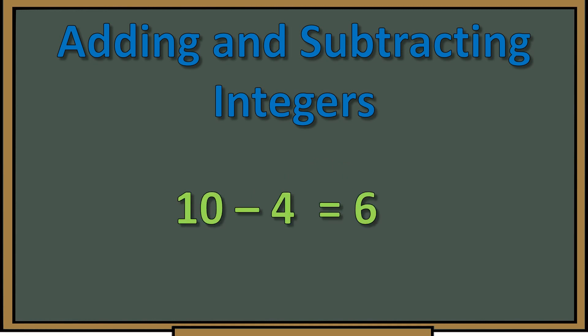We have ten minus four, which should equal six. Now instead of adding, we're subtracting because we have a minus sign between both numbers, so we take away four from ten which gives us six. Our next example is five minus three — again we have a subtraction symbol, so we take away three from five and we're left with two.